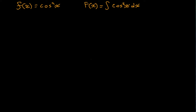We know from trigonometry that cosine squared of x is going to be equal to 1 plus the cosine of 2x divided by 2. So we can plug that in. If you're not familiar with this, you should go check out some trigonometry videos. I'll probably have a demonstration of that there, but I'm not going to derive this right now for the purposes of this video. Let's go back to our original function.